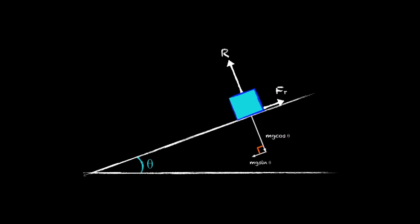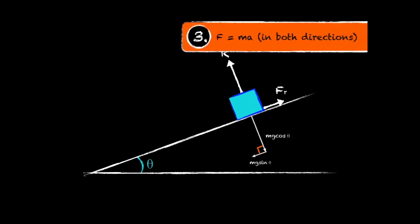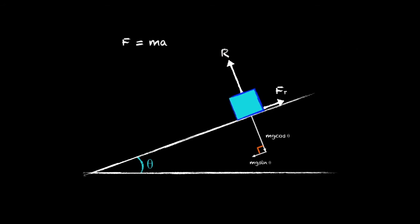So our final step is to use the equation F equals MA either parallel to the slope or perpendicular to the slope or both. But of course the exact equations you get are going to be highly dependent on the specifics of each question.